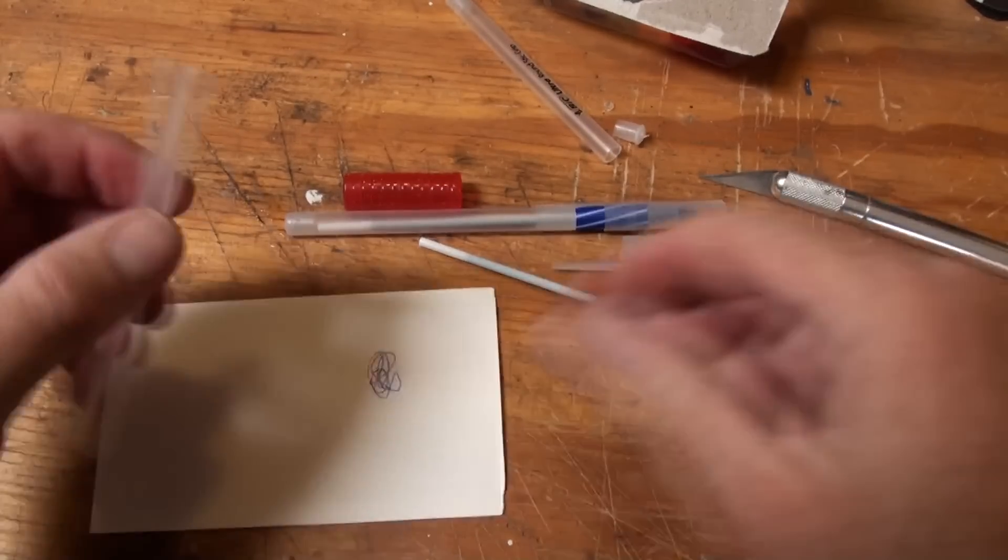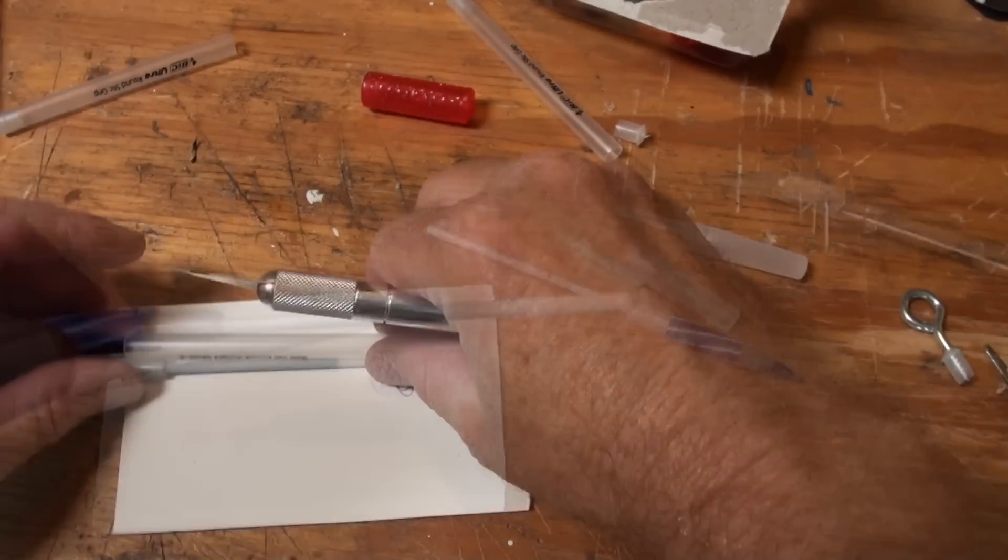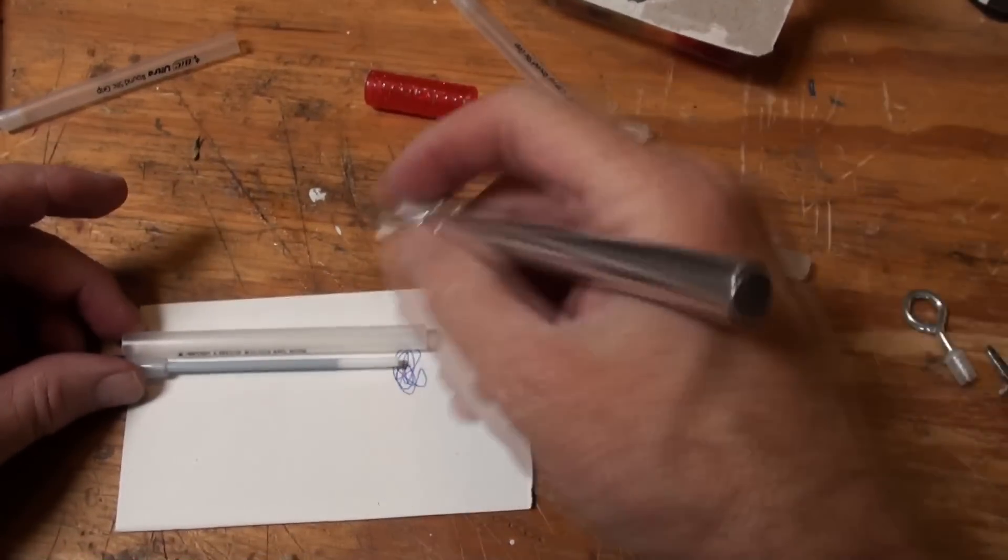Okay, now you've got the barrel. The next thing, and this is the messy part, you got to cut them short enough so that they'll fit. Measure it against the length of the barrel and cut.